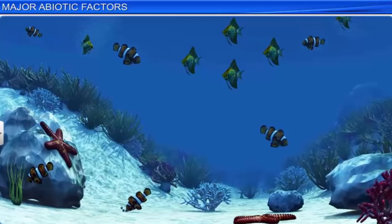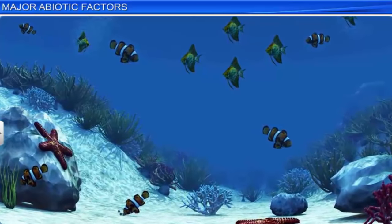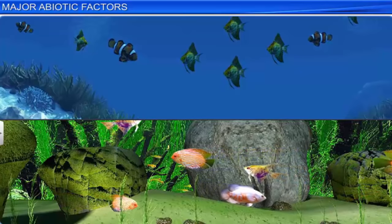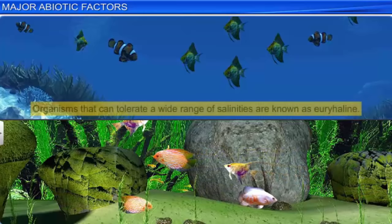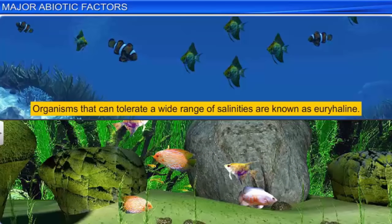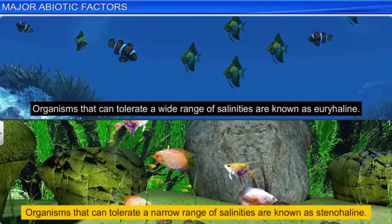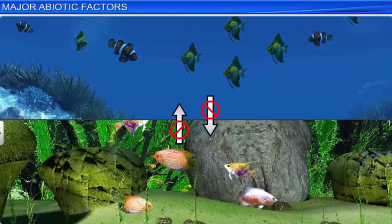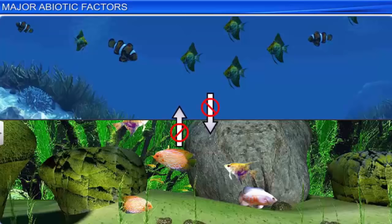Some organisms tolerate a wide range of salinities, while others are restricted to a narrow range of salinities. Organisms that can tolerate a wide range of salinities are known as euryhaline, while organisms that can tolerate a narrow range of salinities are known as stenohaline. This also explains why many freshwater organisms cannot live in seawater for long, and vice versa, as they would face osmotic problems.